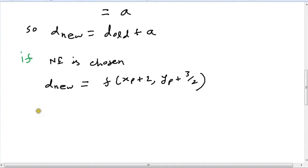So once again, we calculate the difference d_new minus d_old, and this will give us the value a plus b. So in this case, d_new is nothing but d_old plus a plus b.